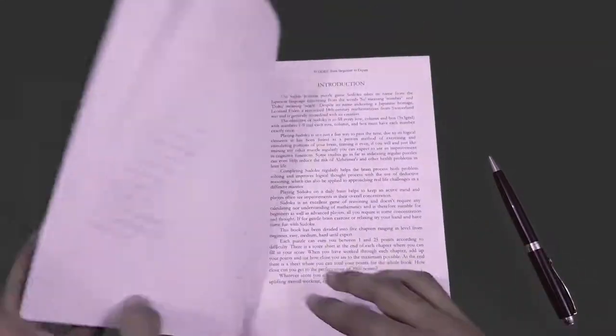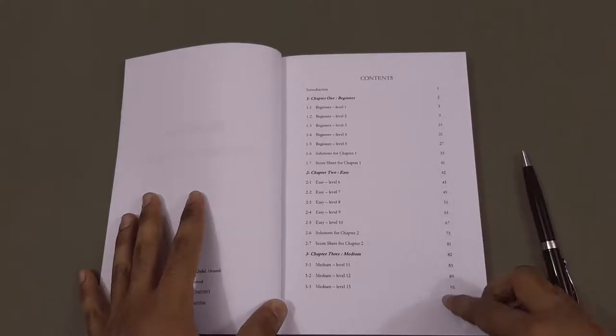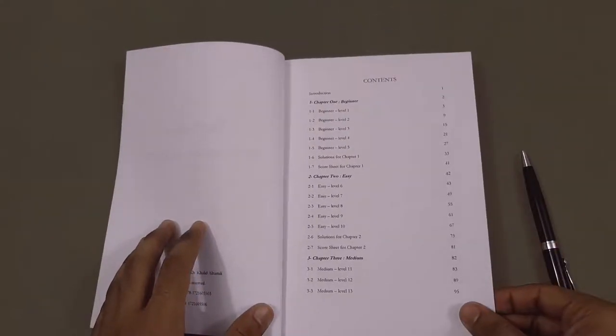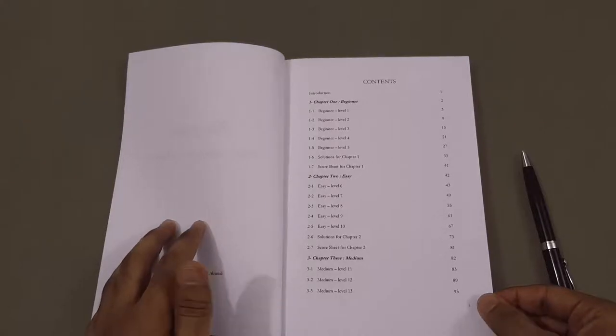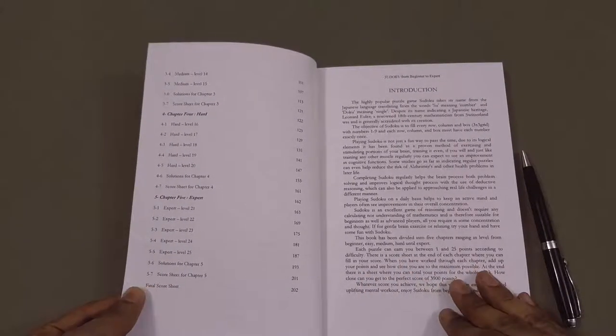Opening the book, we can see the contents. The book is made up of five chapters with increasing levels of difficulty: Beginner, Easy, Medium, Hard, and Expert.